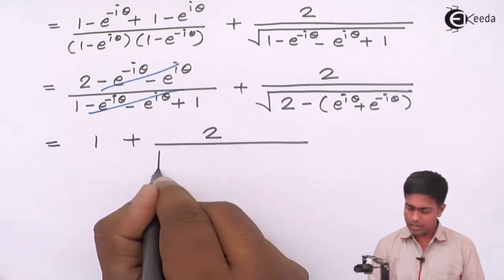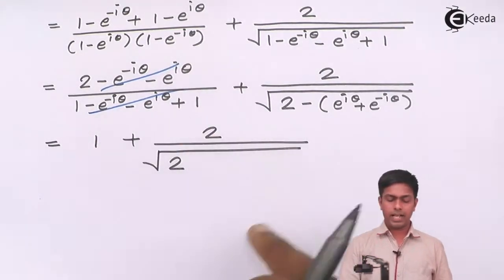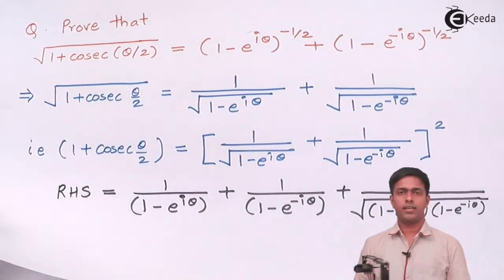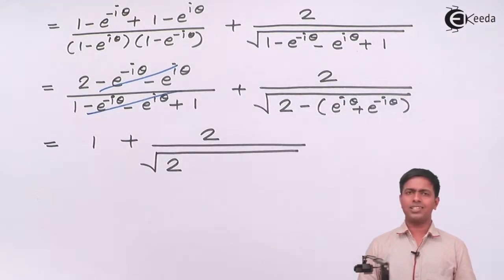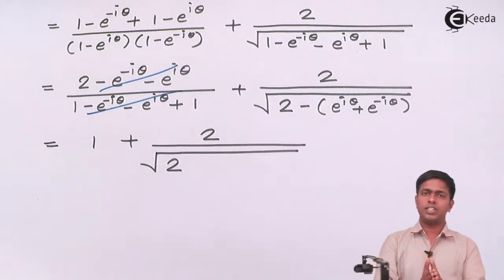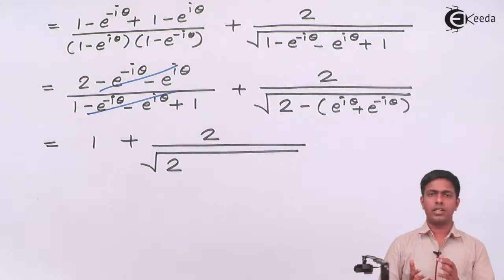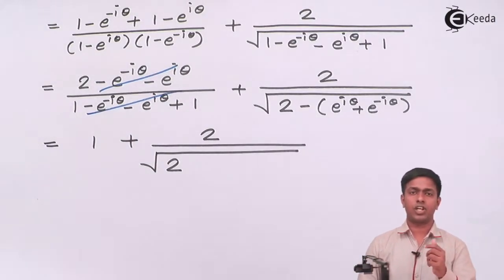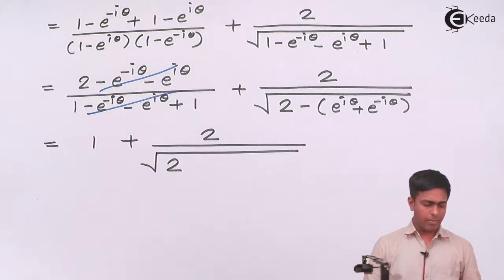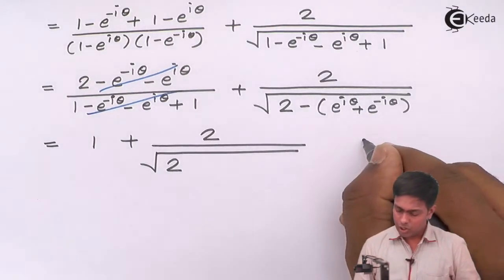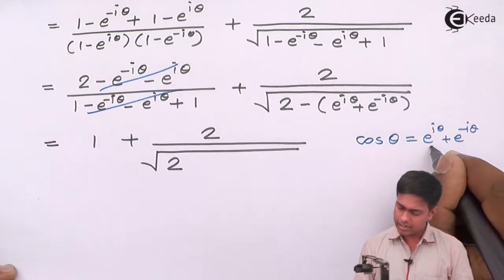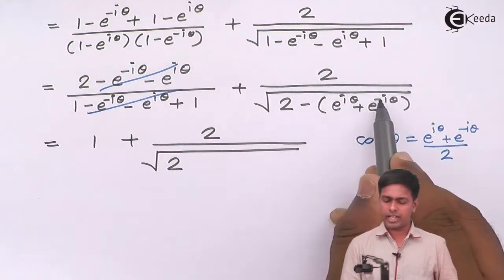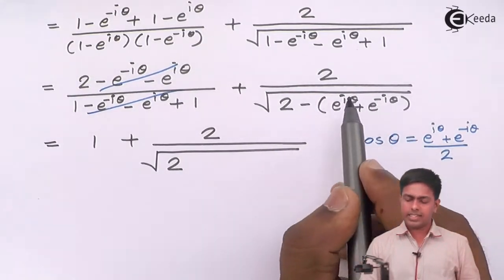Now to get cosec in the answer, we need sine in the denominator. This is where Euler's rule gives the relationship between exponential terms and trigonometric functions. The formula is: cos θ = (e^(iθ) + e^(-iθ)) / 2. So e^(iθ) + e^(-iθ) = 2 cos θ.